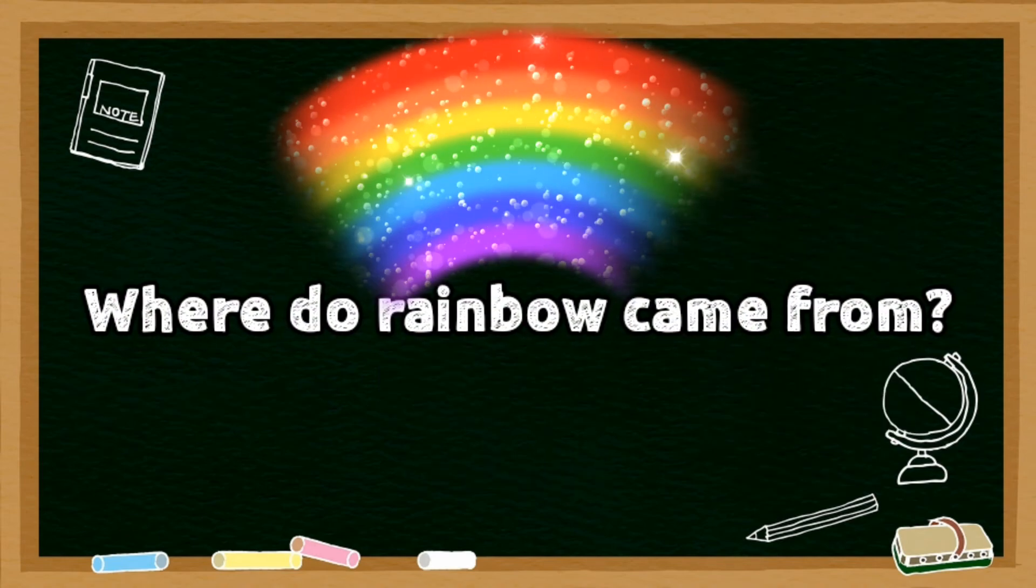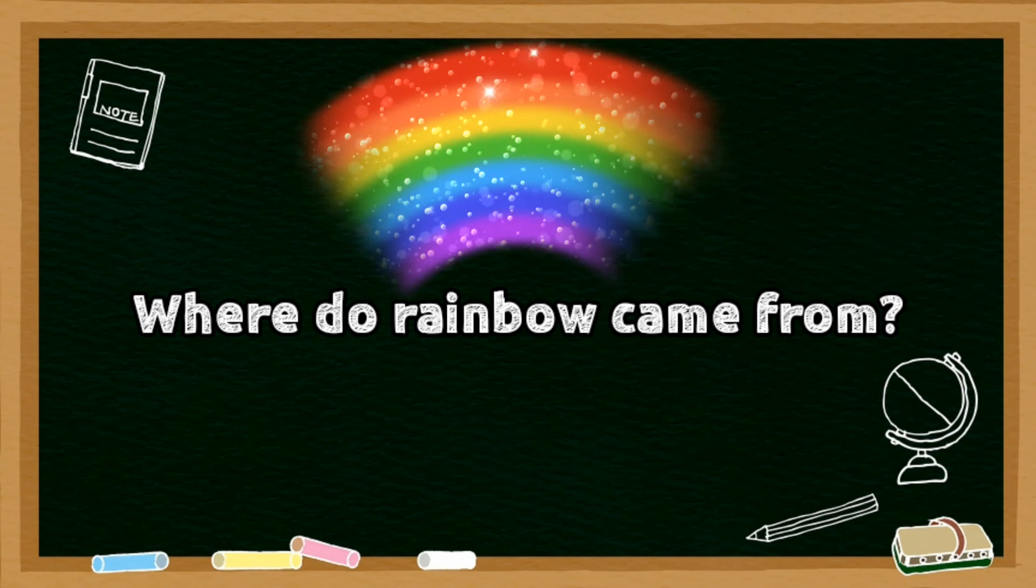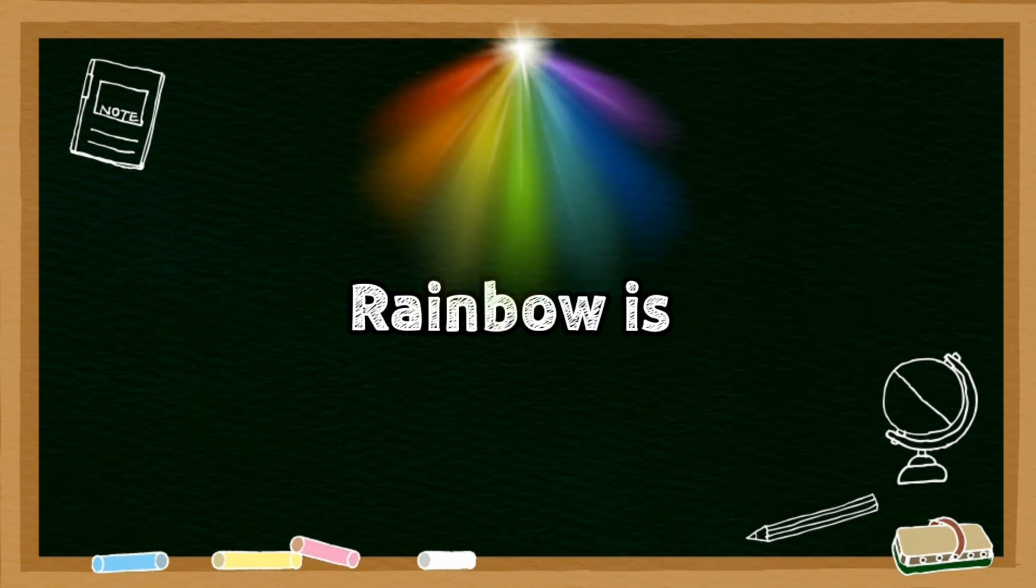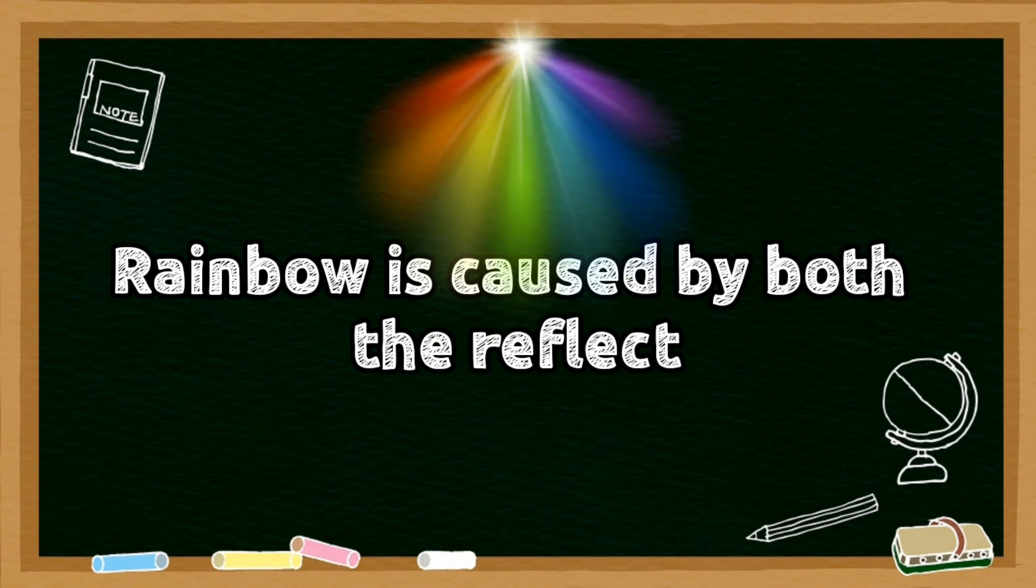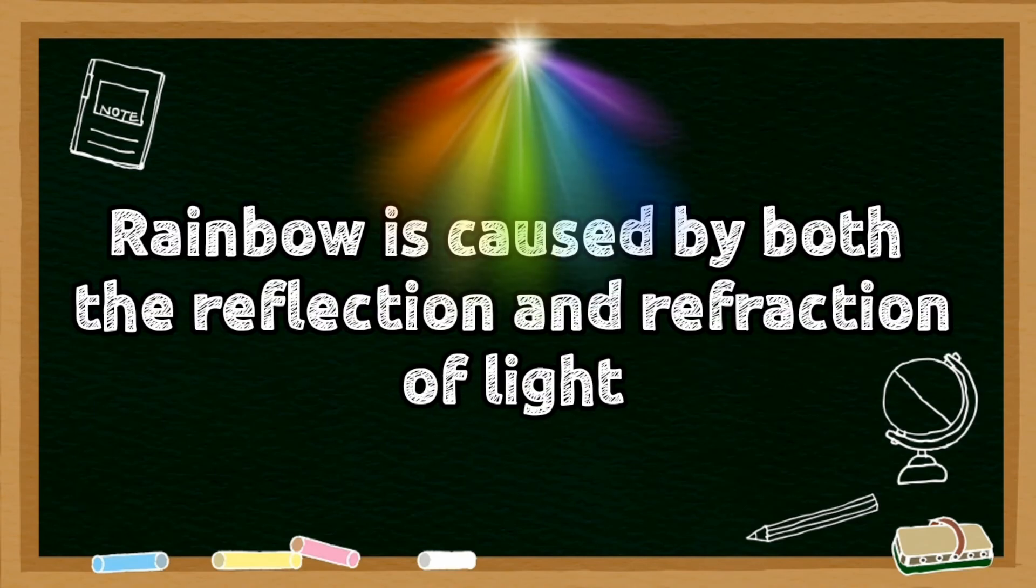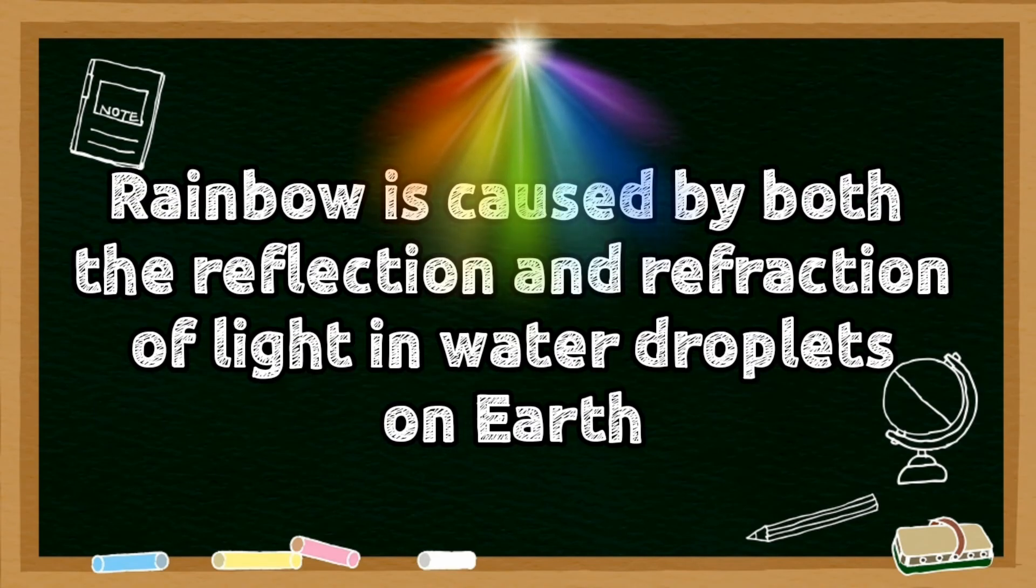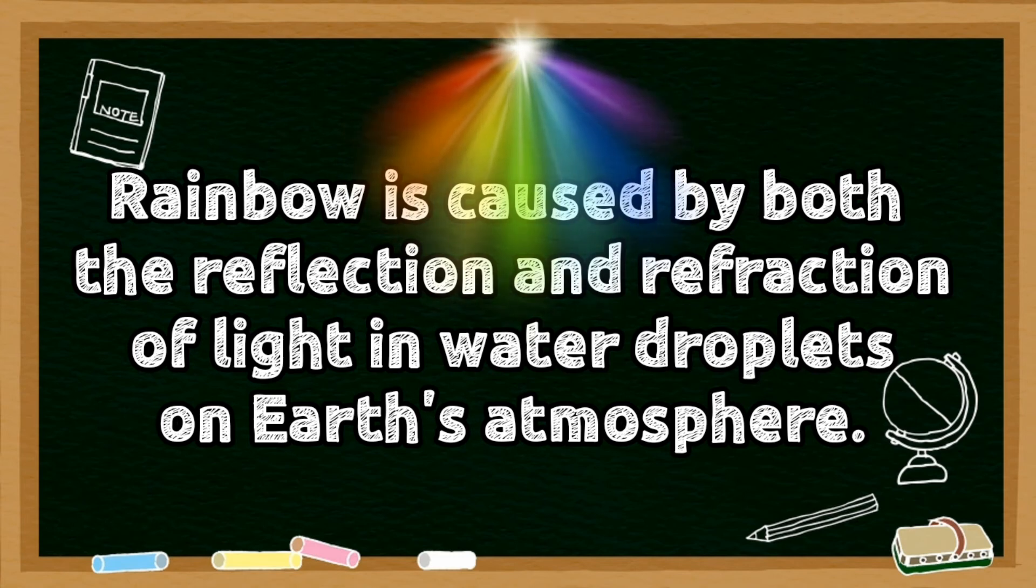So where do you think a rainbow came from? A rainbow is caused by both the reflection and refraction of light in the water droplets in the Earth's atmosphere. The water droplets act as prisms.